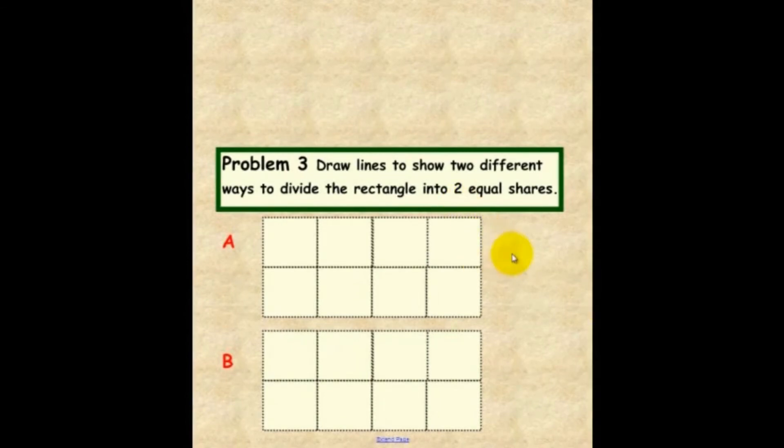Okay, let's see if we can find the answer to problem three. Now, you'll notice that we have two. And what I'm going to do, this is an easy one, is I'm going to draw a line straight across. So we have equal shares up here and here. And we did it this way on B. So we have equal shares on this side as well as this side.